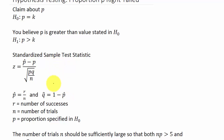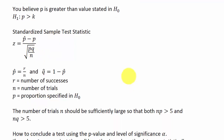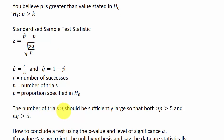R is equal to the number of successes. N is equal to the number of trials, and P is the proportion specified in the null hypothesis. Q equals 1 minus P. The number of trials N should be large enough so that both N times P is greater than 5, and N times Q is greater than 5.